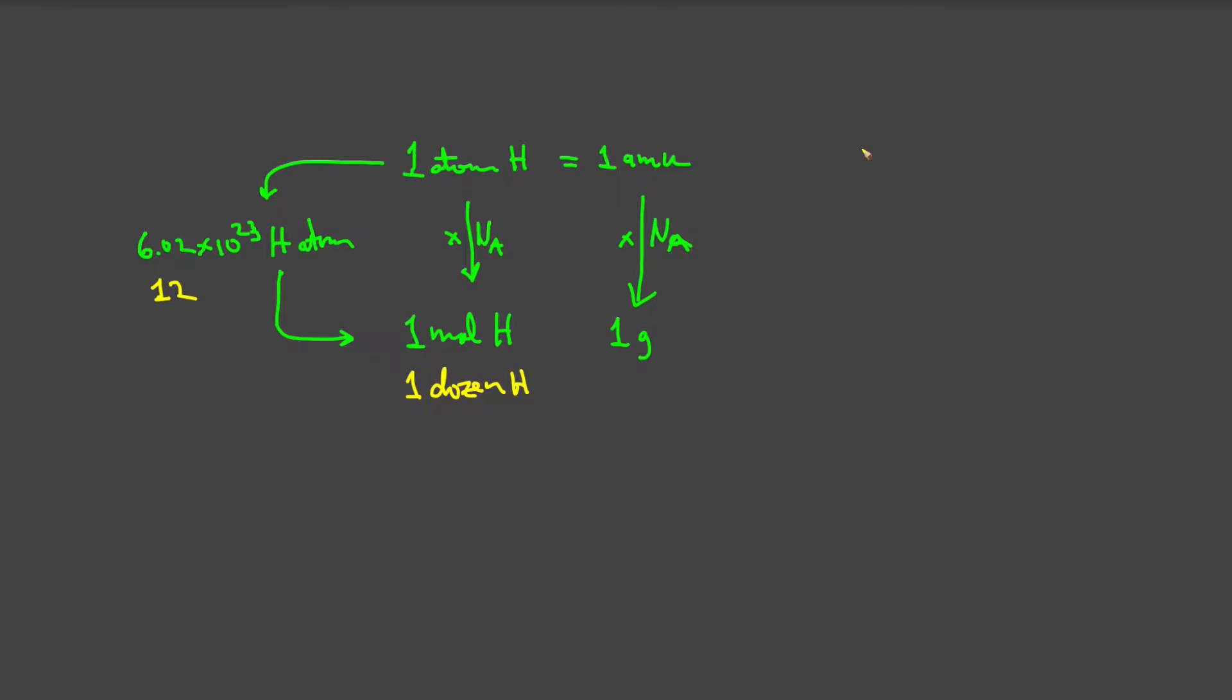So, here's what we have. There's 6.02 times 10 to the 23rd of things in one mole of those things. It can be atoms, it can be molecules, it could be golf balls. And that is exactly analogous to having 12 things and calling it one dozen.